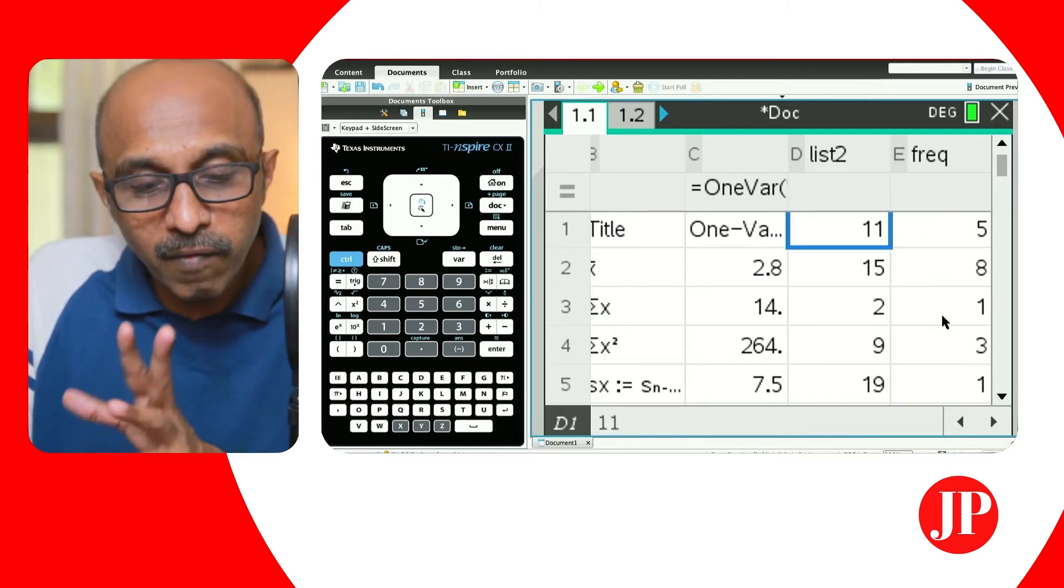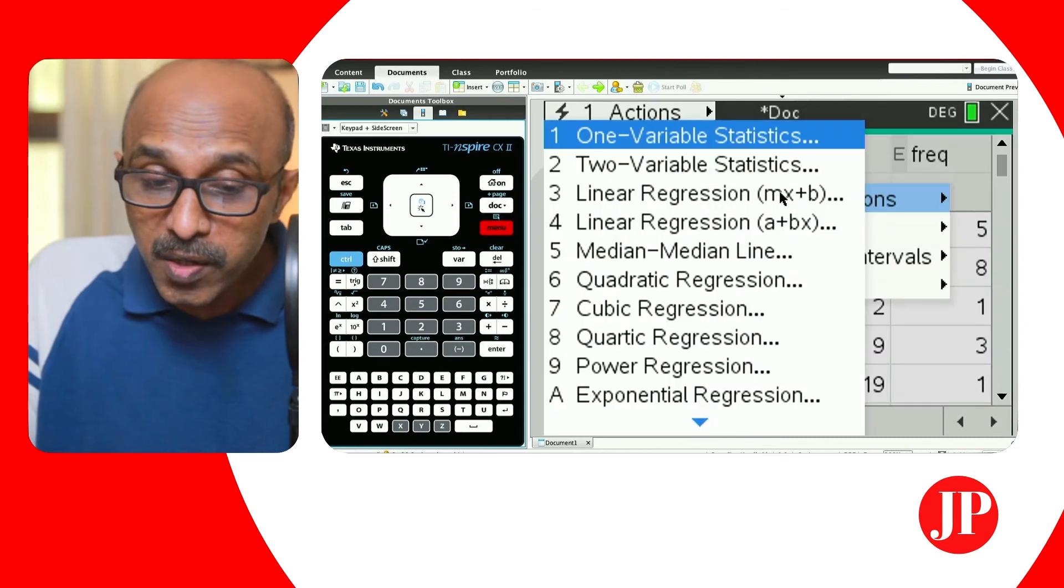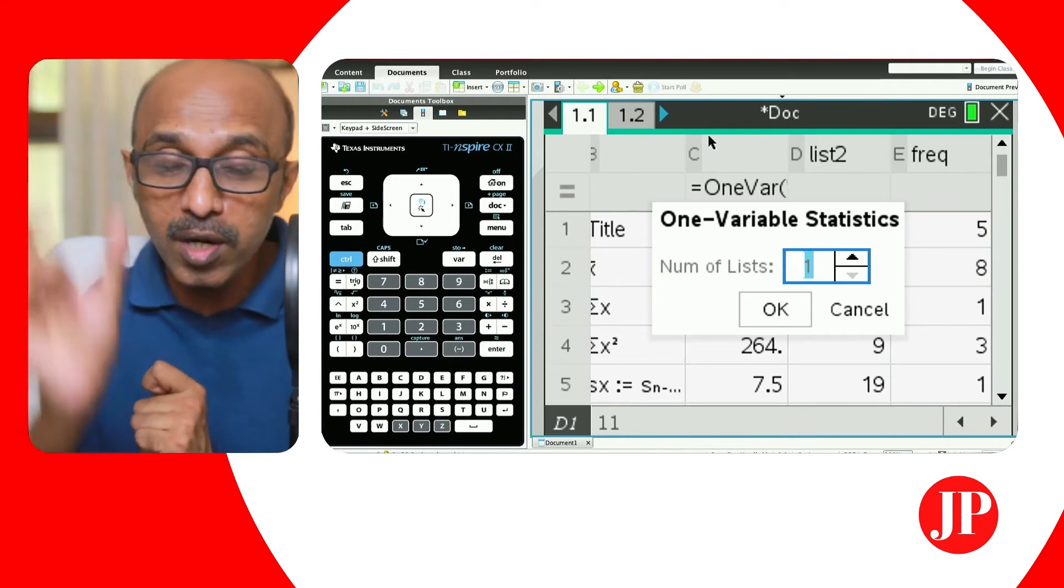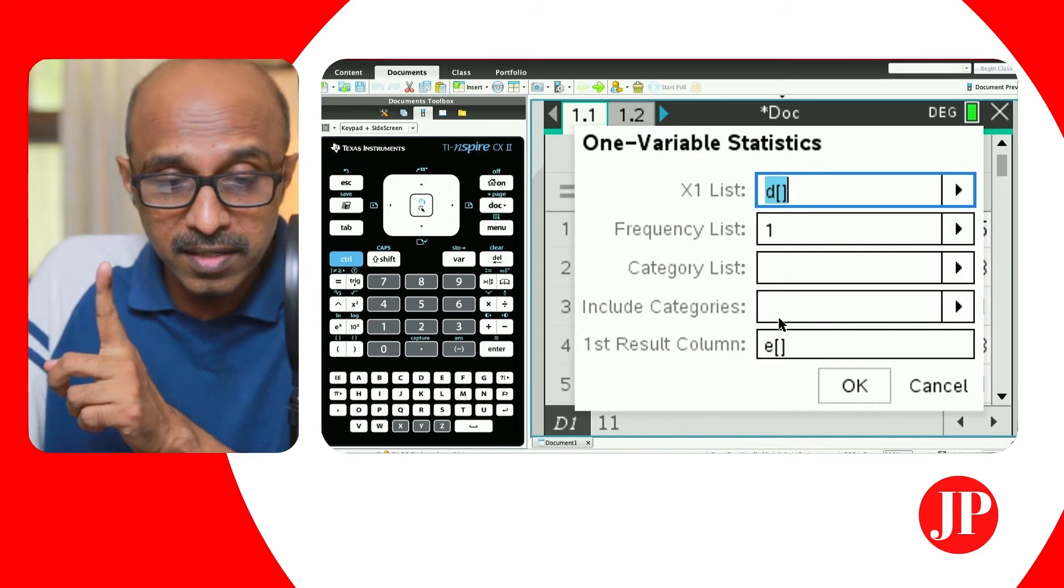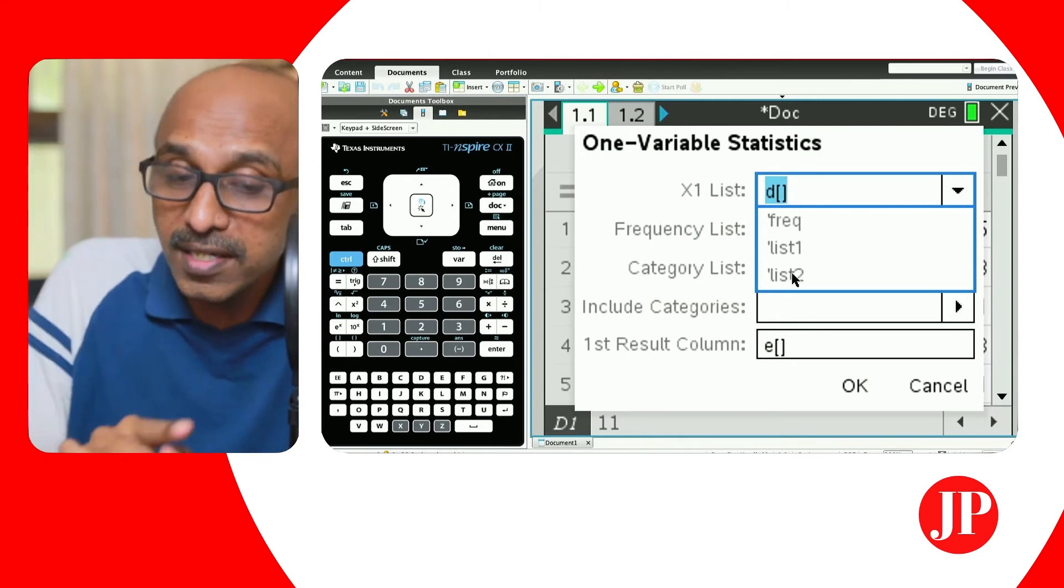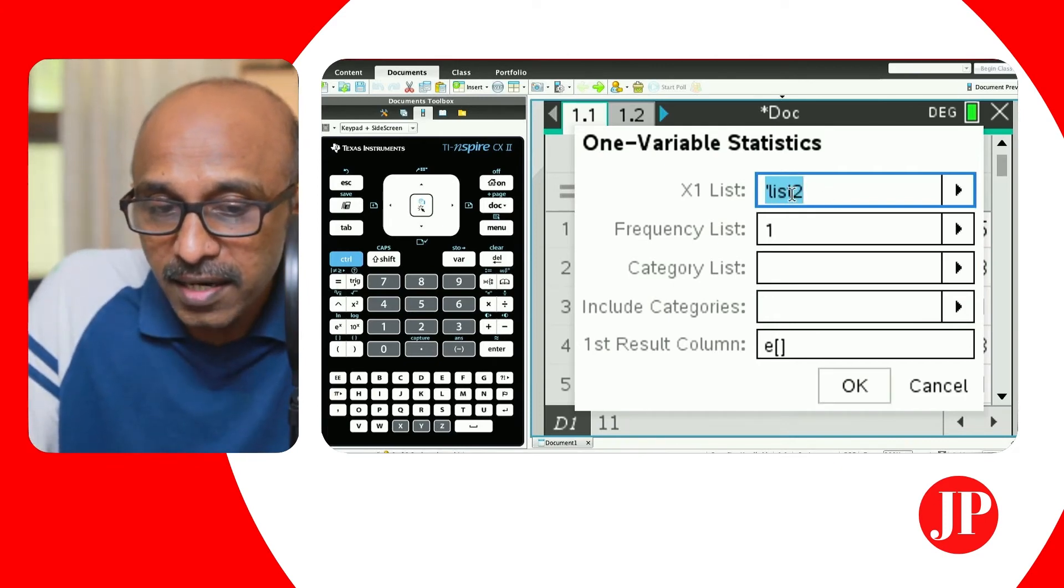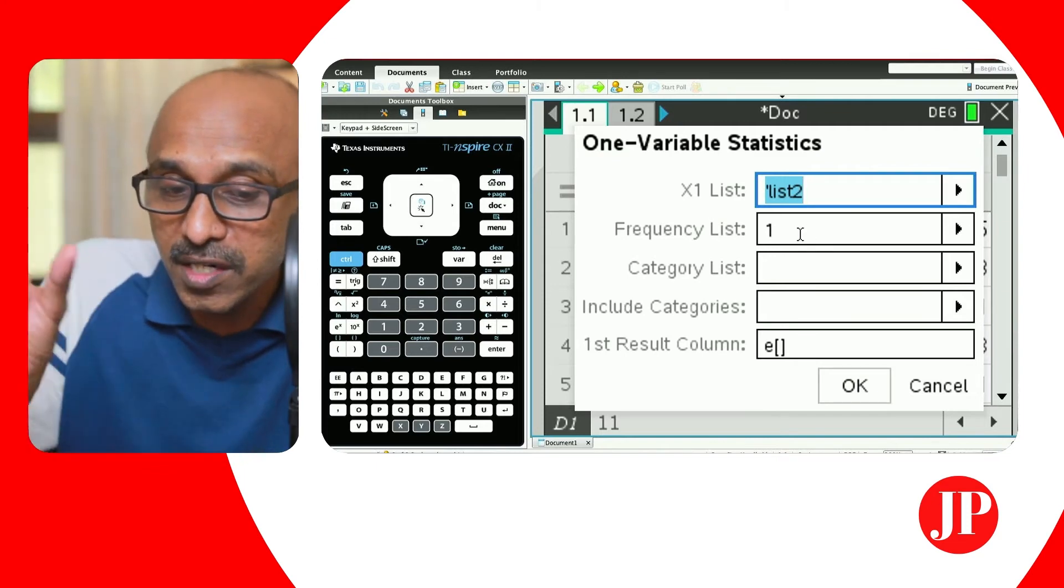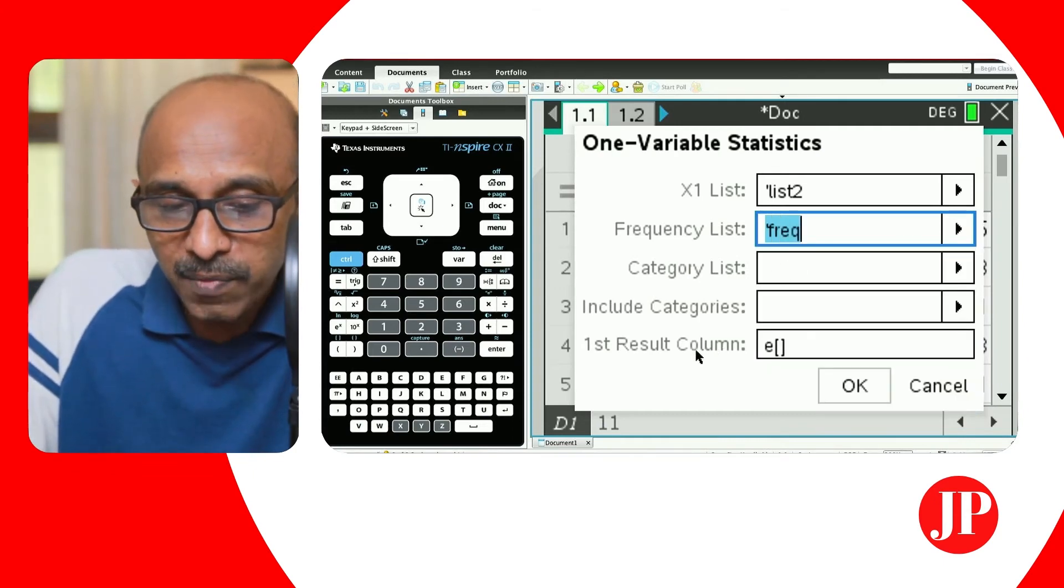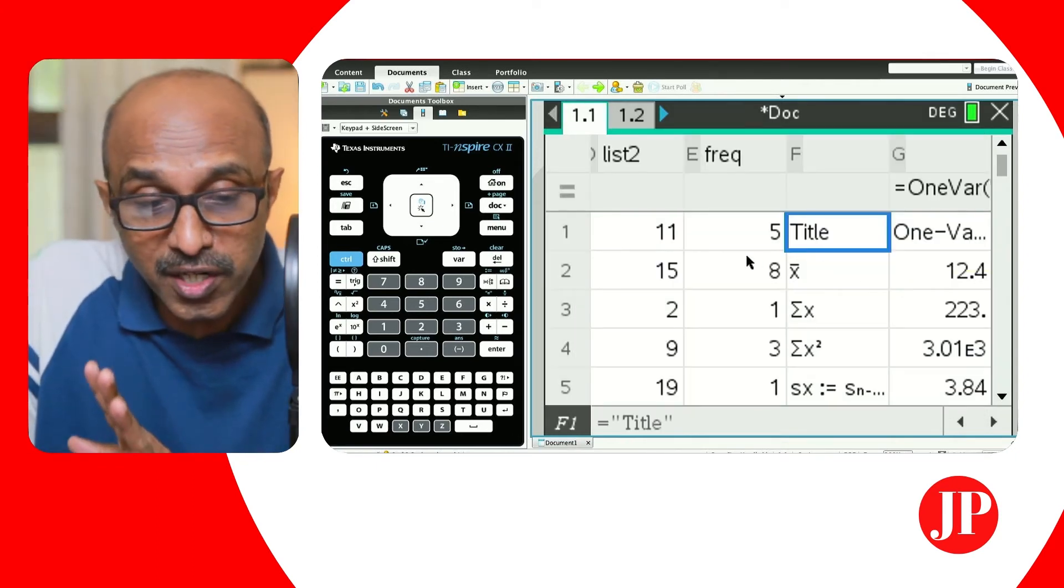So now if you want to calculate the one variable statistics for a frequency distribution, something like this, you can go to menu, statistics, stat calculations again, one variable statistics again. But now be careful how you are recalling the list name, the column, what it's coming from. So I'm going to say number of lists is one because it's one variable statistics. X list. X list comes from list two. So that's what I meant by saying. If you've got more than one list, this is where you have to be careful about saying where what's coming from. So label it correctly and use it correctly. So our data is coming from list two. Frequency list. This is a frequency distribution. So now we're going to choose the frequency from a column that we have labeled it as FREQ. And we'll say that we want the results to be shown from column E.